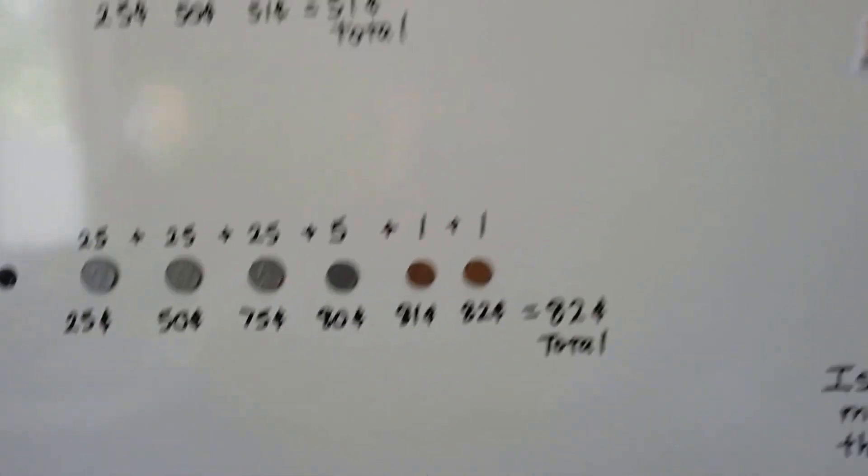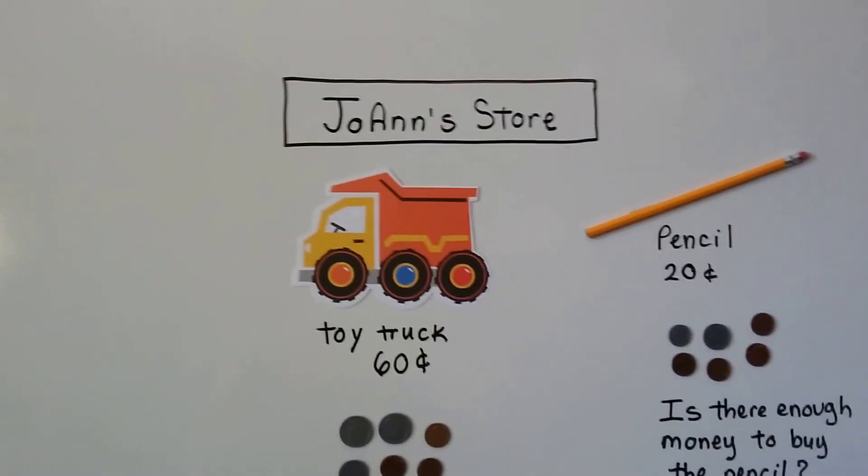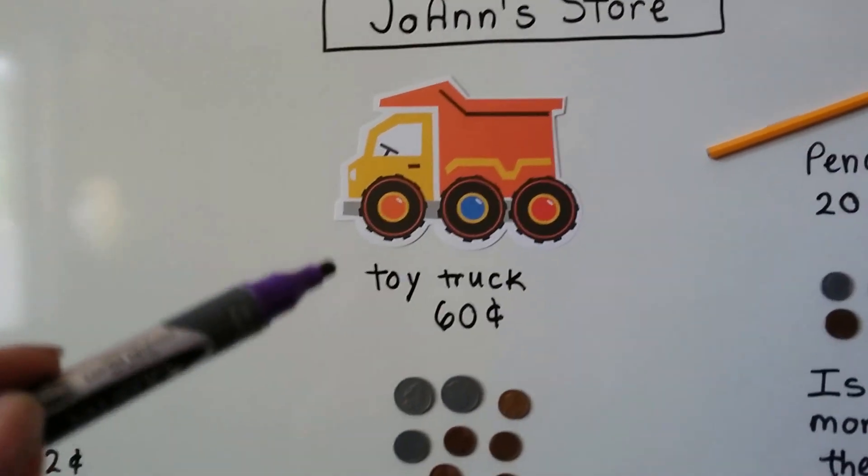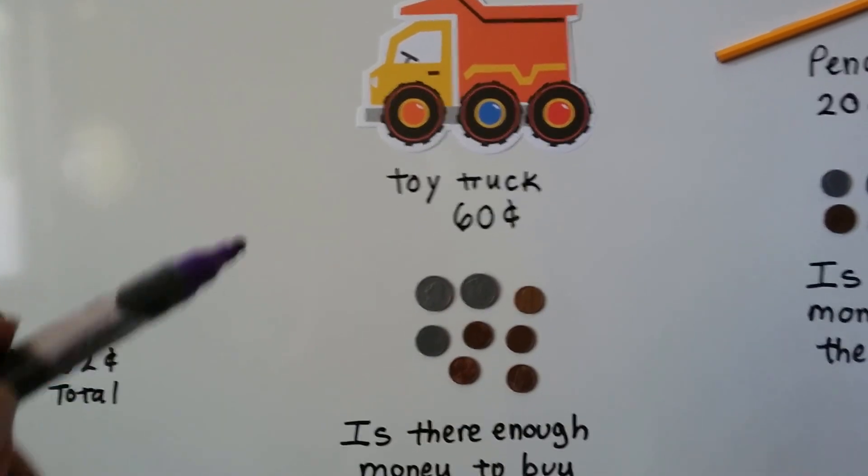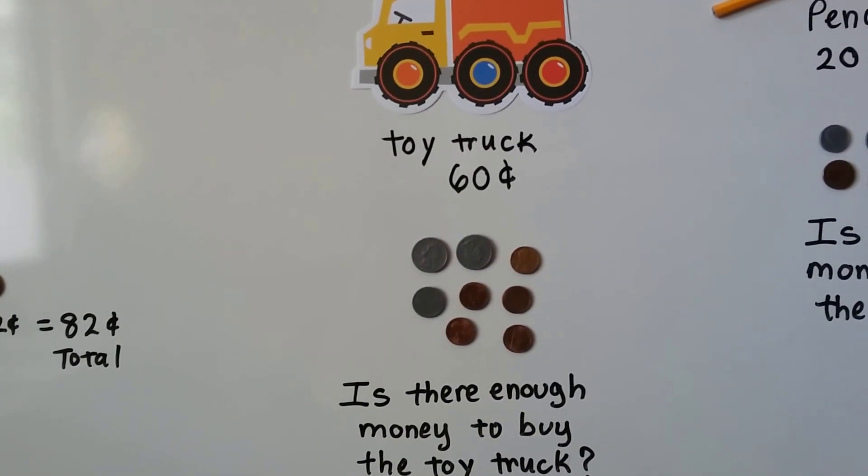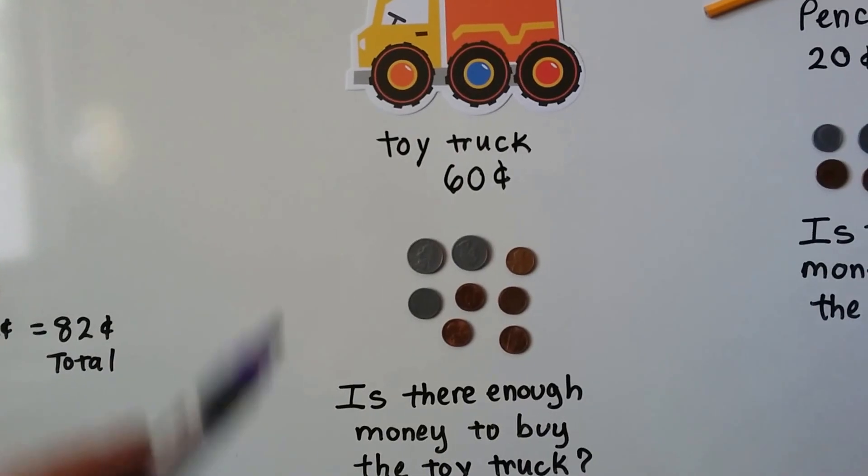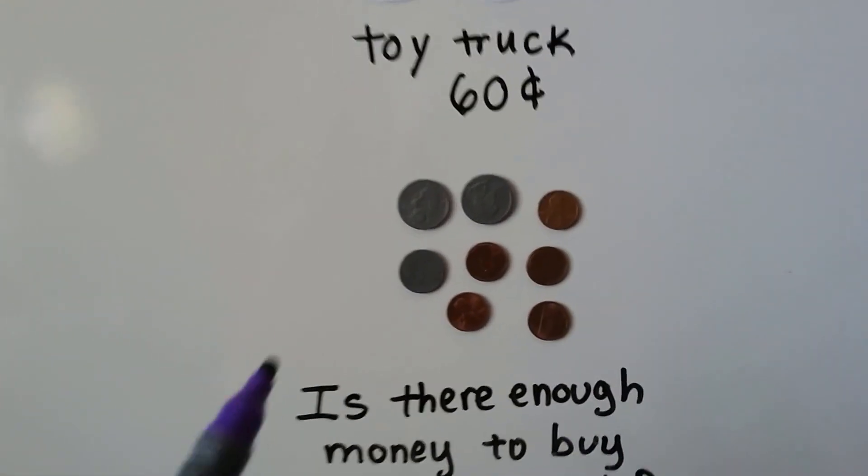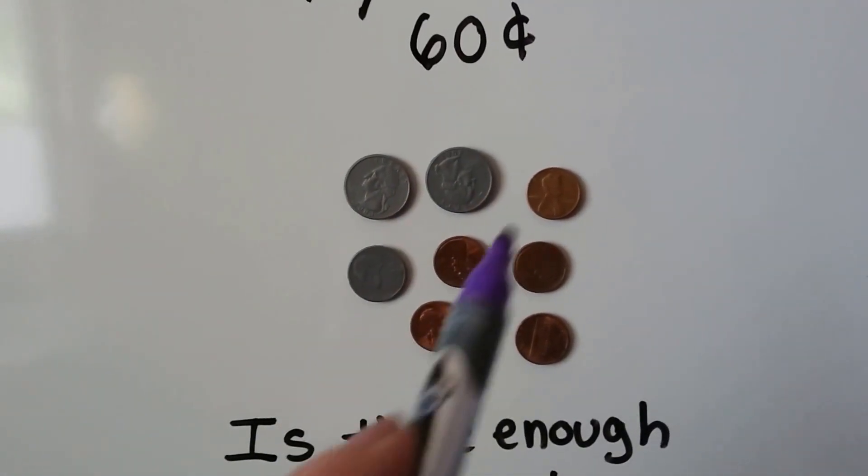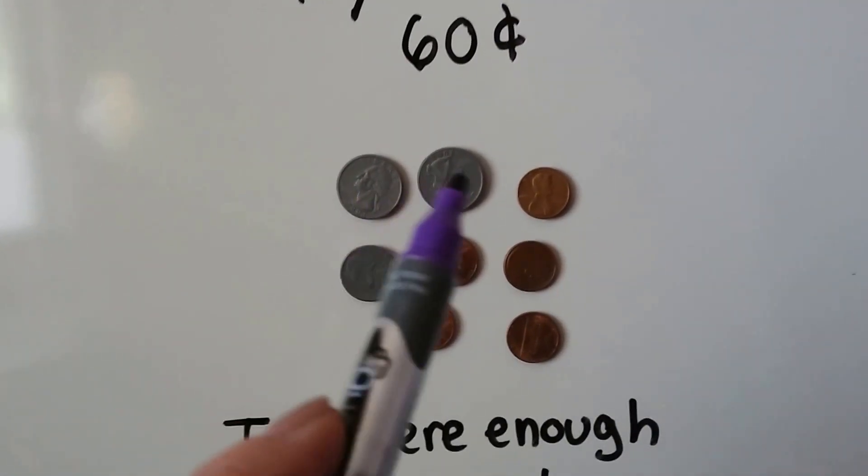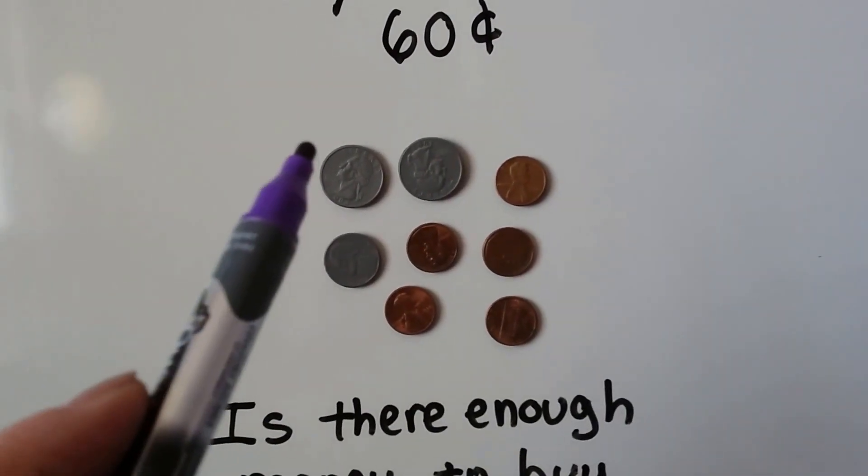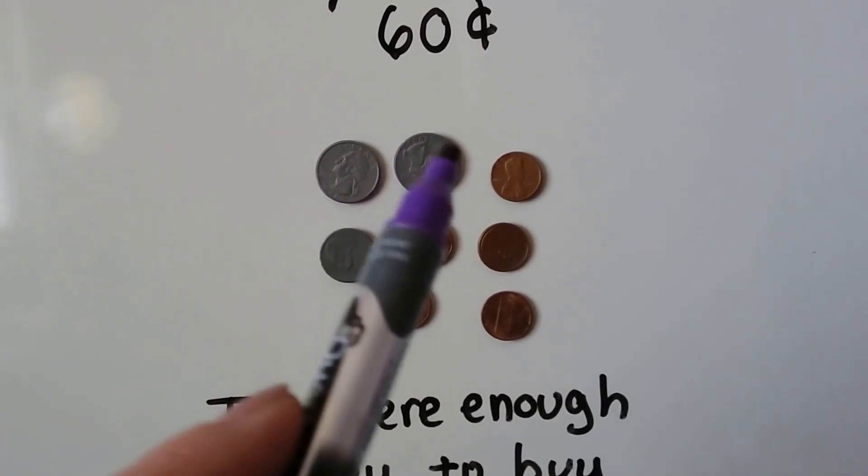So now we're going to have some fun. This is Joanne's store. This is my store. And I've got a toy truck for 60 cents. We have some coins here. We need to know if there's enough money here to buy the toy truck. The toy truck costs 60 cents. We have 2 quarters. We have a nickel. And we have 5 pennies. So we start with the biggest numbers first. The quarters for 25 cents. And we count 2 of them. 25, 50.